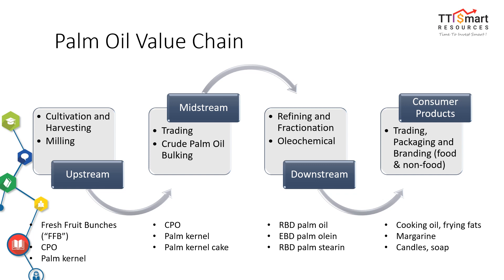Upstream industry includes cultivating and harvesting fresh fruit bunches (FFB). They extract crude palm oil (CPO) and palm kernel from the fruits. Those upstream companies with no milling operation will sell FFB to companies with milling operations. After processing, upstream companies will sell CPO and palm kernel to downstream companies.